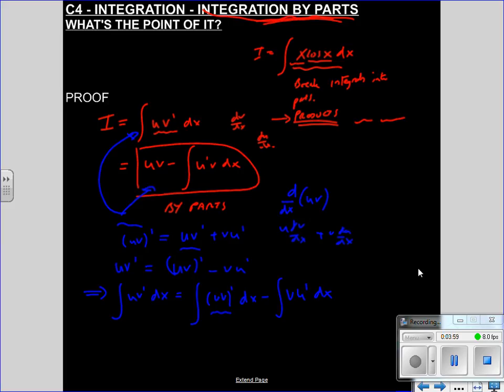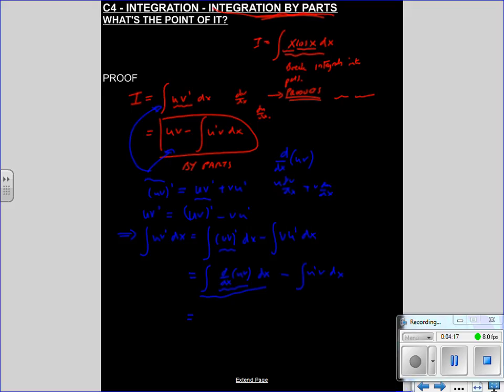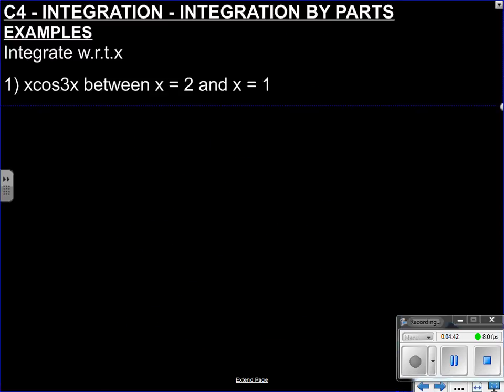If we now integrate both sides with respect to x, minus v u dash dx. We're nearly there, aren't we? Because this means the differential of u v integrated again. So if you differentiate u v and then integrate it again, you're back to what you started with, which was just u v. And that's where the by parts formula comes from. It just comes from rearranging the product rule, and then integrating everything.